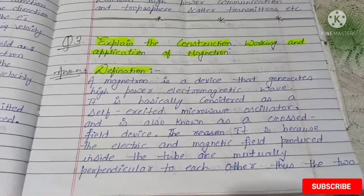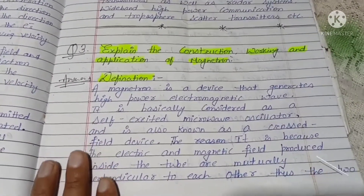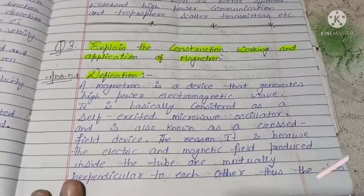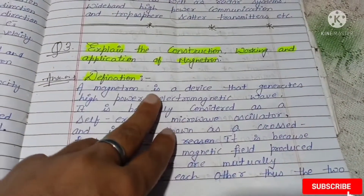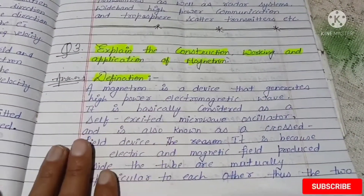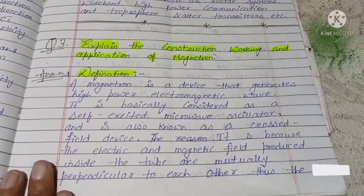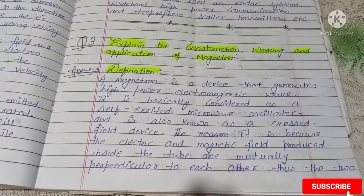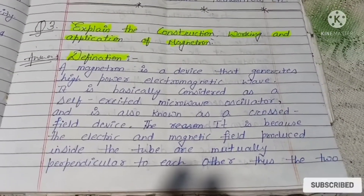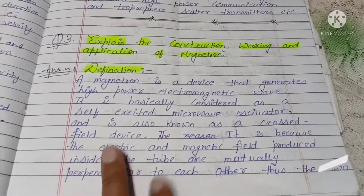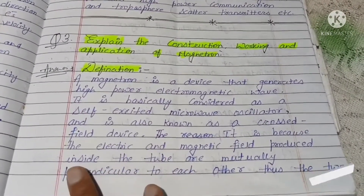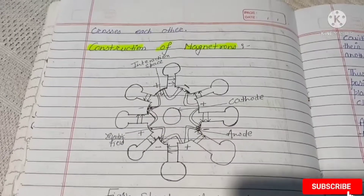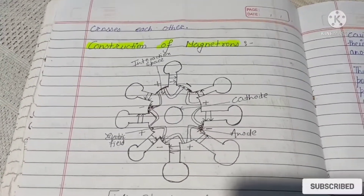First we should know the definition: a magnetron is a device that generates high-power electromagnetic waves. It is basically considered as a self-excited microwave oscillator, and it is also known as a crossed-field device. This is because the electric and magnetic fields produced inside the tube are mutually perpendicular to each other — thus the two cross each other.